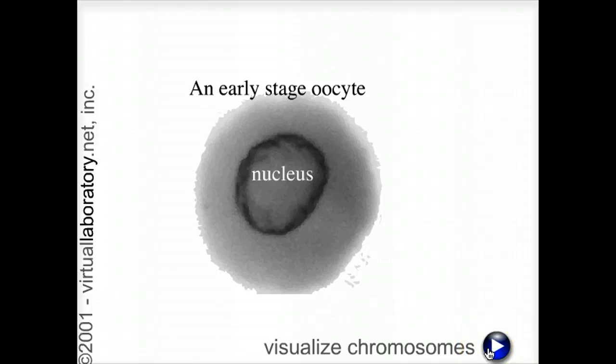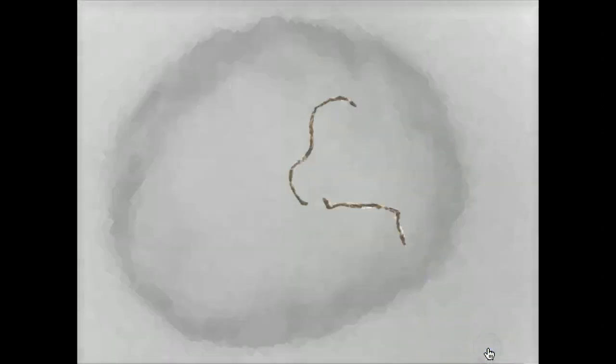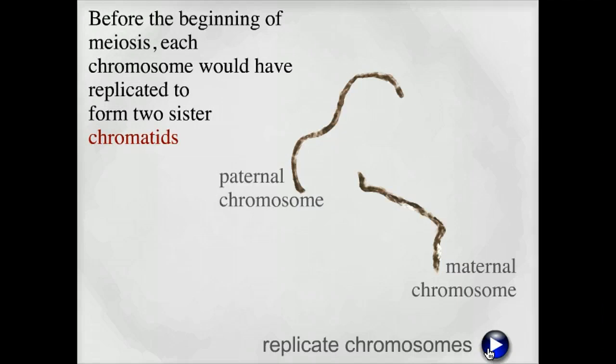Let's visualize the chromosomes in this cell. Before the beginning of meiosis, or mitosis for that matter, each chromosome would have replicated to form two sister chromatids, the old name for replicated chromosome.